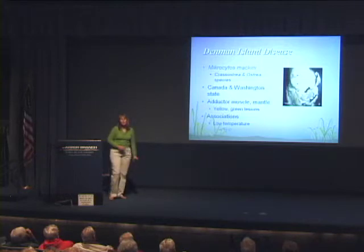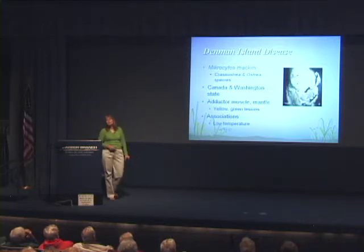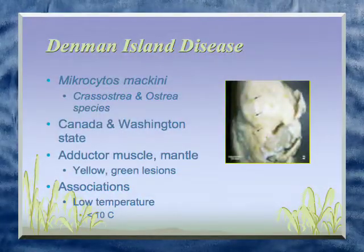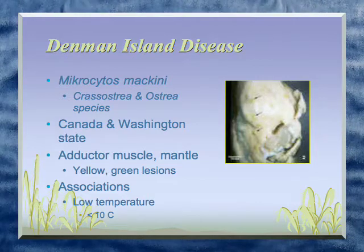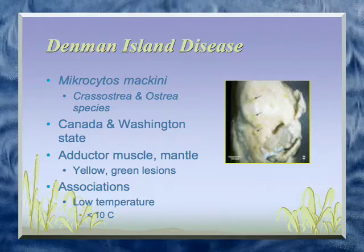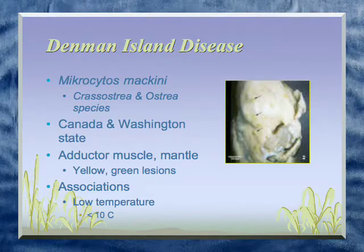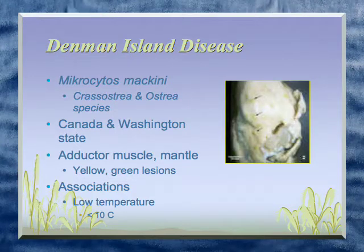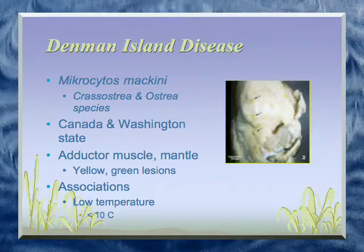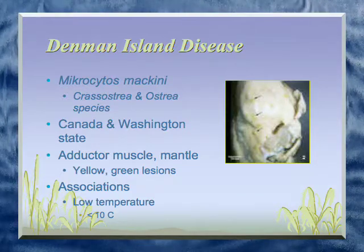Denman Island disease — I don't have a lot of experience with this because it's only found on the west coast of the United States and mainly affects the Pacific oyster, Crassostrea gigas. It has pretty distinct nasty lesions — instead of just looking watery and thin with not a lot of meat, it actually has distinct yellow and green pustules. This one has a different association: the temperatures it's associated with are low temperatures, and it doesn't really have an association with salinity, which is why you'd only see it in Canada and Washington State.